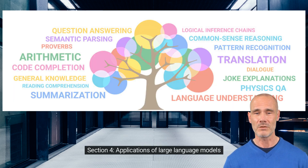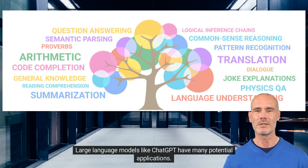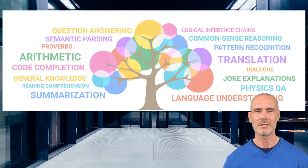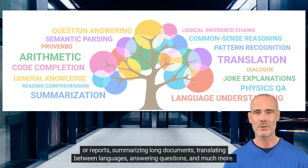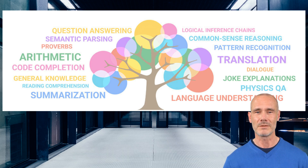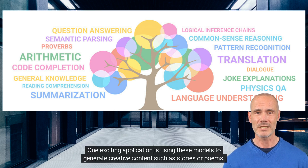Section 4. Applications of Large Language Models. Large language models, like ChatGPT, have many potential applications. They can be used for tasks such as generating text for chatbots or virtual assistants, writing articles or reports, summarizing long documents, translating between languages, answering questions, and much more. One exciting application is using these models to generate creative content such as stories or poems.